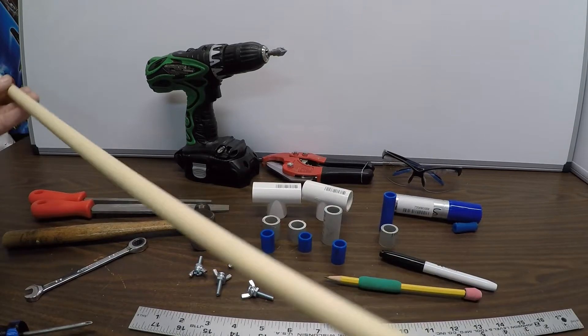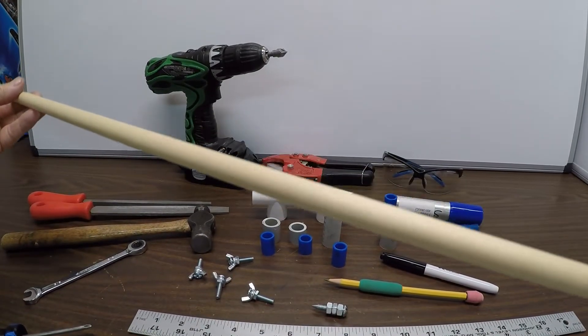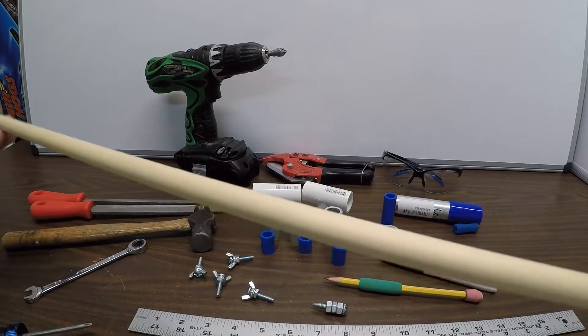Or you can do what I did and get a four-foot one for a little extra. Typically a quarter to fifty cents more. And then you can make upwards to an eight-foot circle.